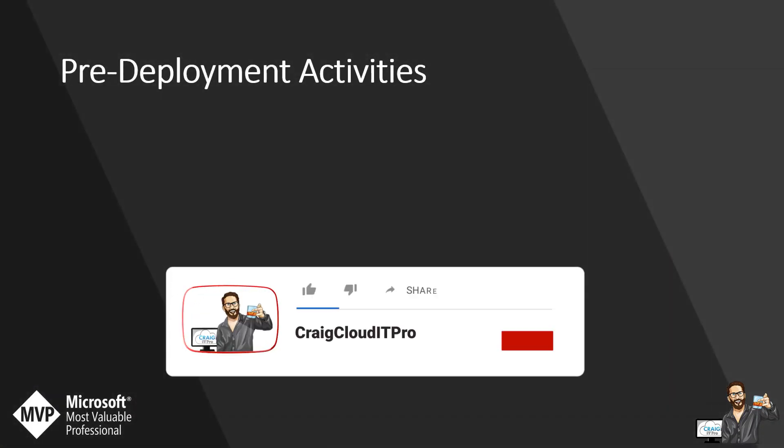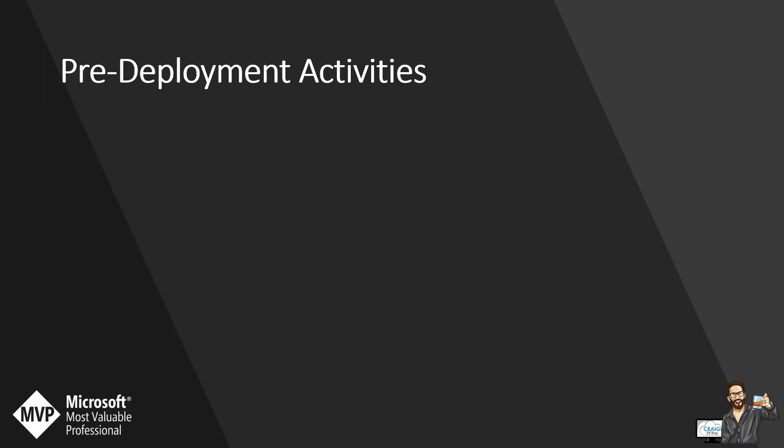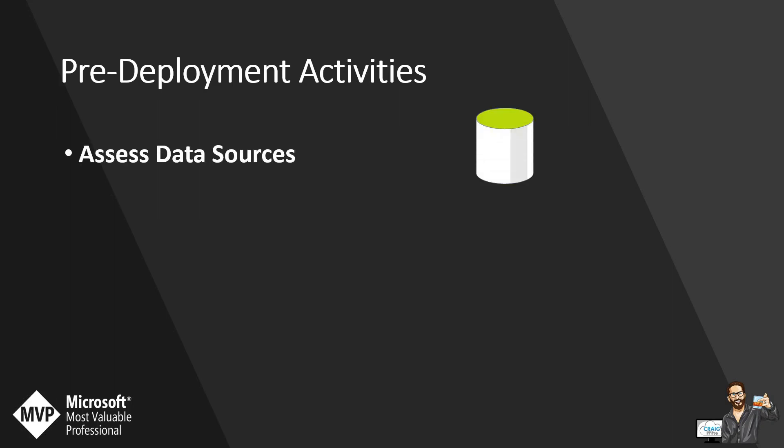So, pre-deployment activities. Before deploying Sentinel, you should be taking the following steps to help focus your deployment on providing maximum value. The first thing is you need to assess which data sources you need and the data size requirements to accurately project your deployment budget and timeline. You need to determine this information during your business use case review, or by evaluating a current SIEM that you already have in place. If you have a SIEM in place, analyze your data to understand which data sources provide the most value and which use cases relate to that data source.